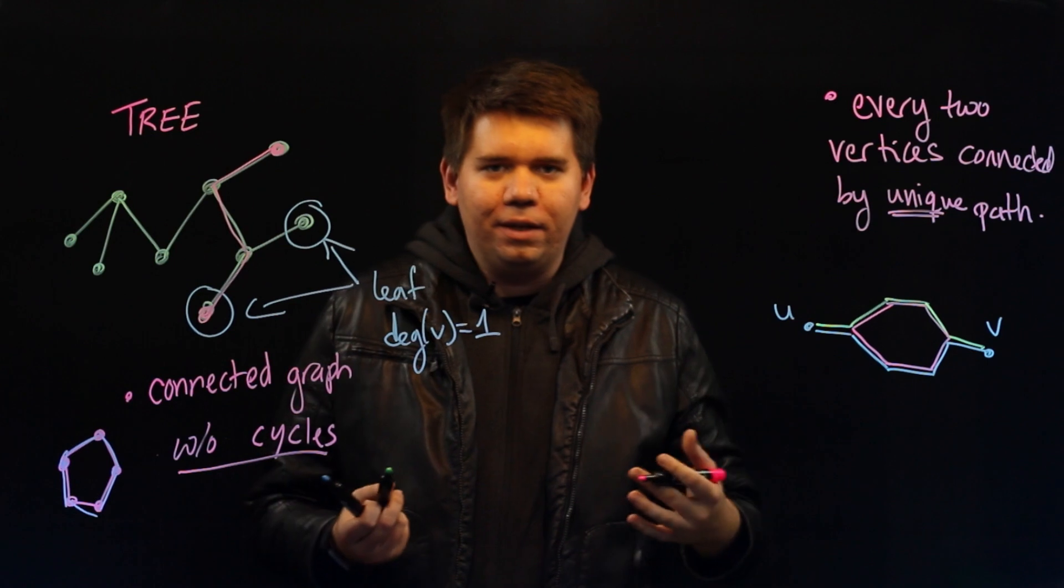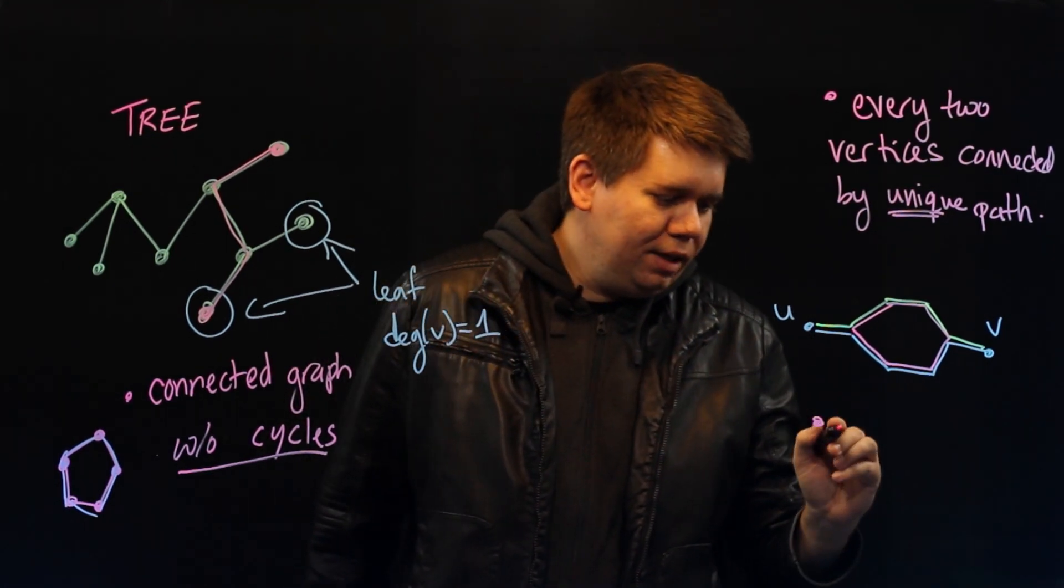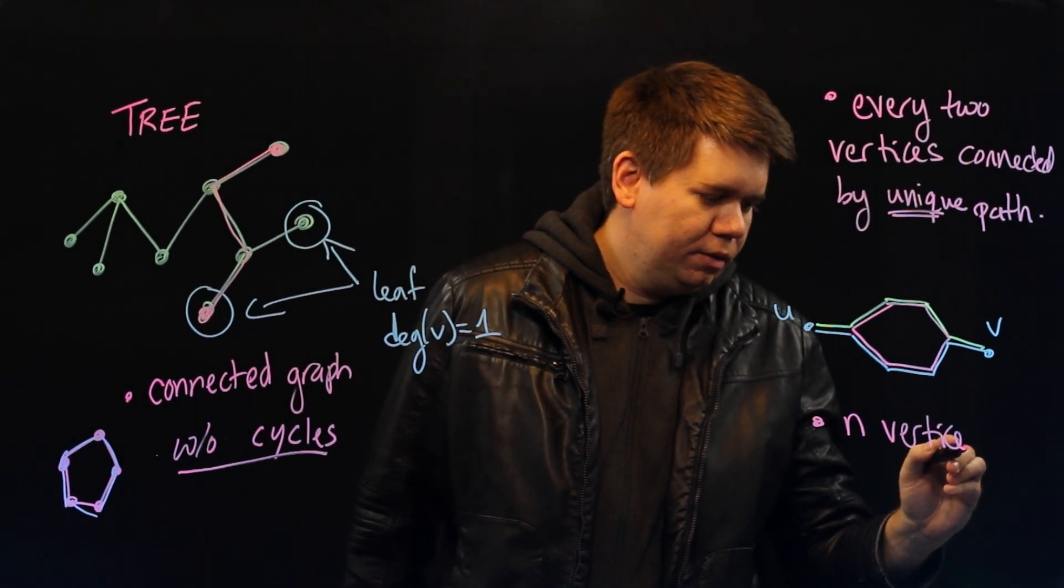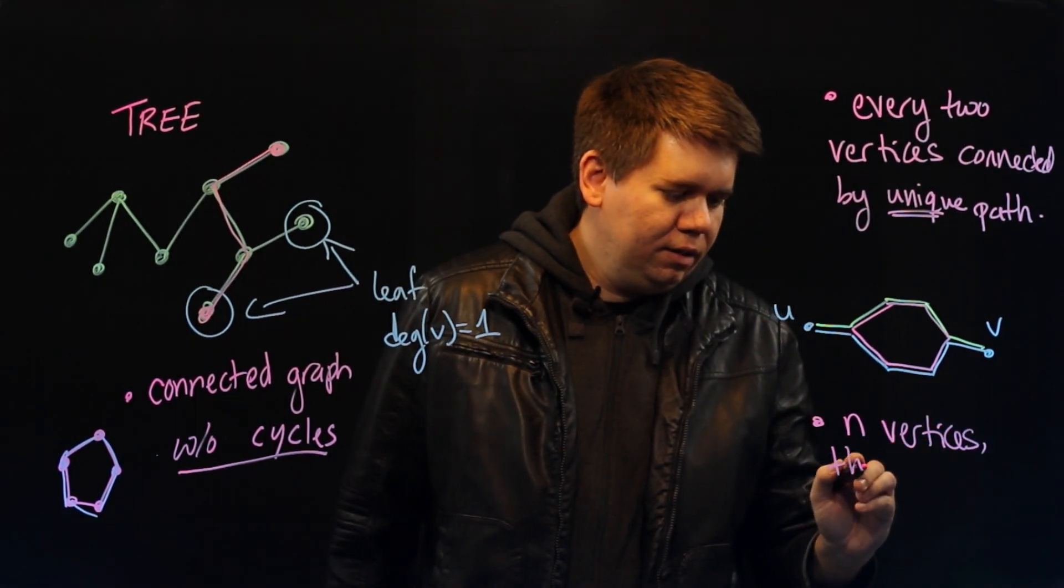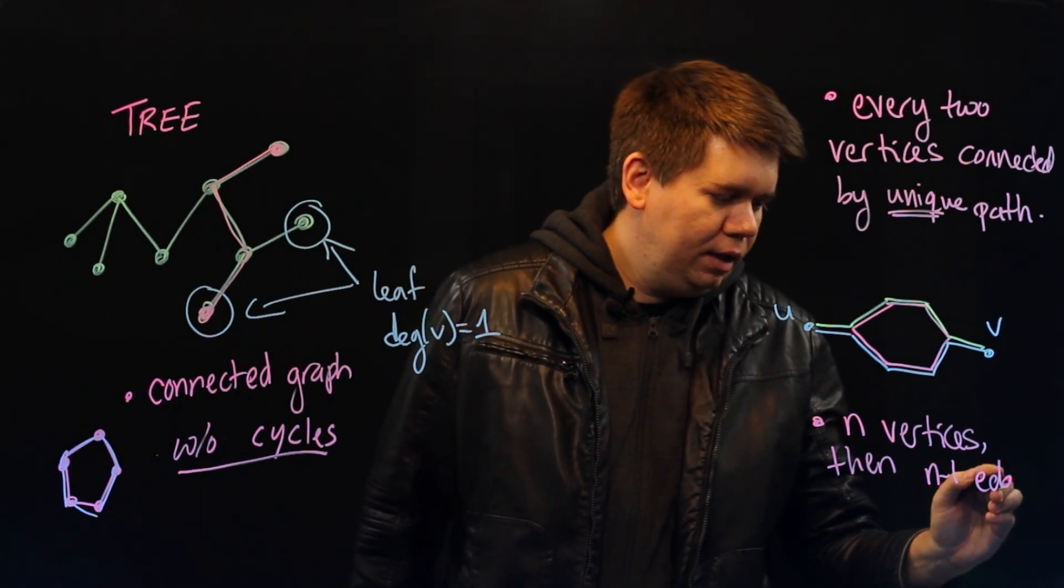There's another property of trees. If your tree has n vertices, then it has n minus 1 edges.